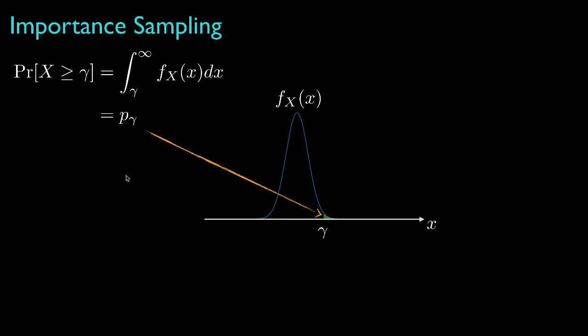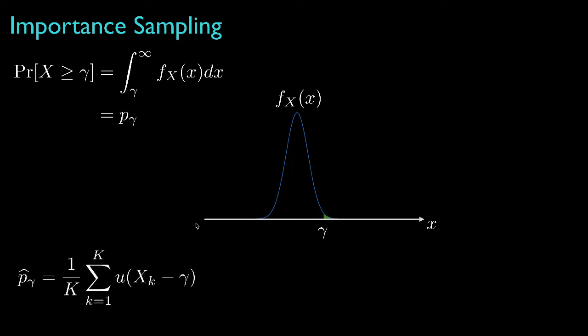Sometimes the integral of this distribution might be difficult to work out. Instead, we could try the Monte Carlo method, where we simulate several realizations of the random variable and then see what percentage of the trials are in the tail beyond the threshold. Mathematically, that corresponds to averaging a unit step function shifted to the threshold gamma, evaluated at each realization. Practically, this amounts to counting the number of realizations greater than the threshold and dividing by the number of trials.